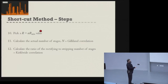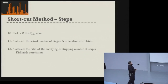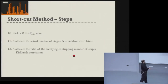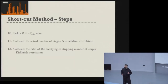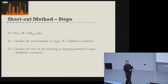With N_min and R_min established, we define an actual reflux ratio — typically starting with something like 1.1 or 1.2 times the minimum reflux ratio. Using that actual reflux ratio, we apply the Gilliland correlation to calculate the actual number of stages, and then use the Kirkbride equation to calculate the feed tray location. Every time you use the shortcut method, you work through these 12 steps to get your distillation column design.